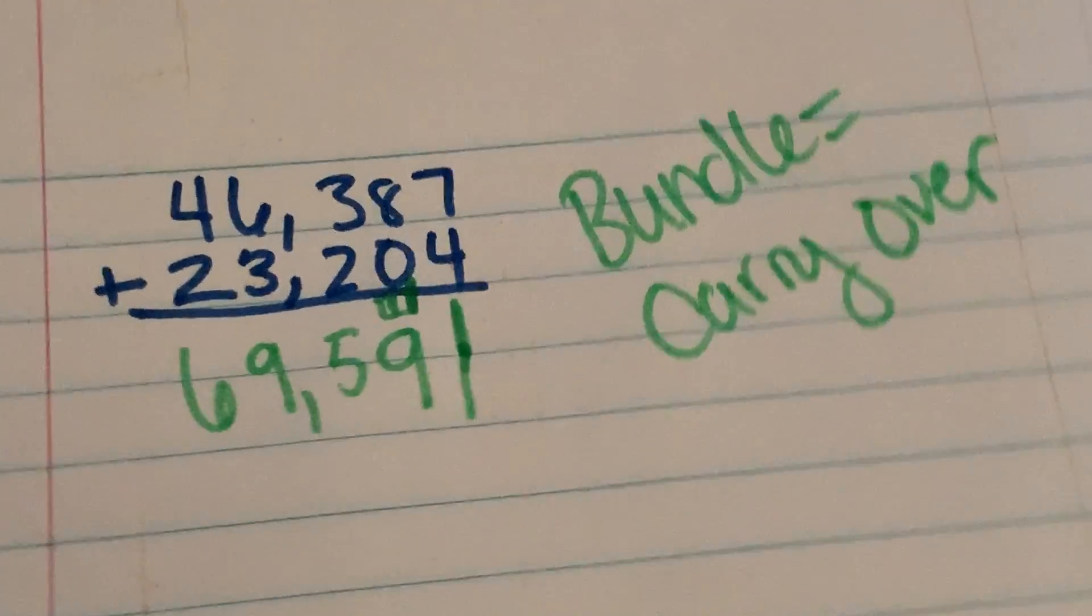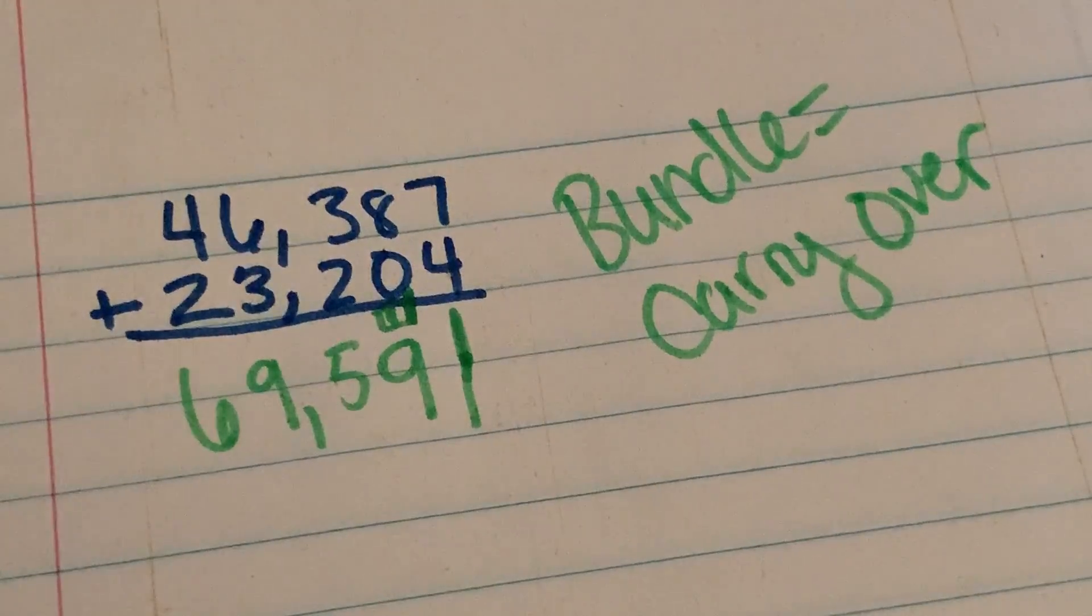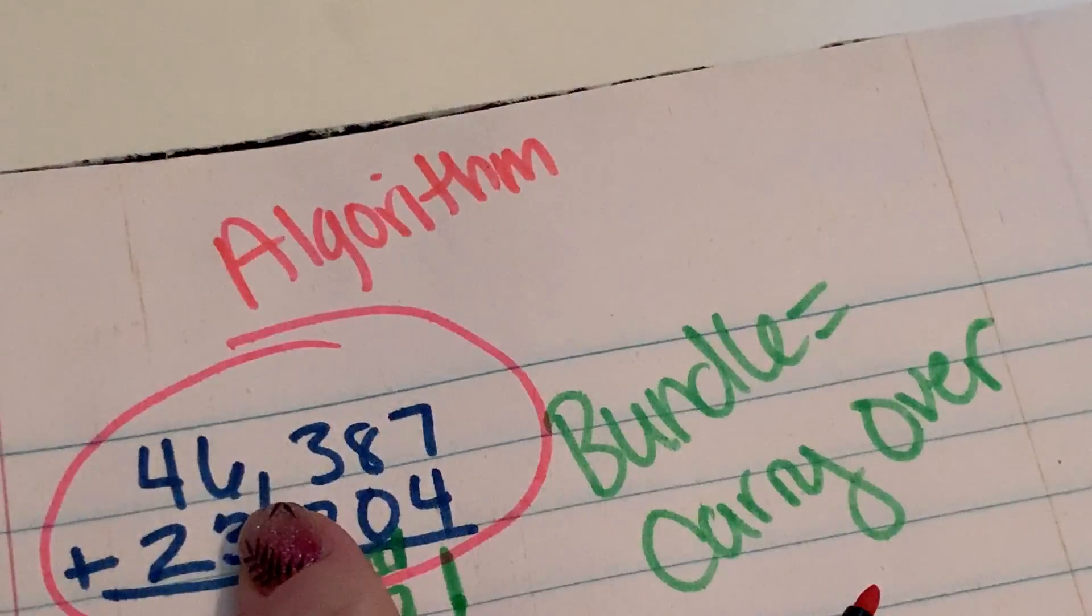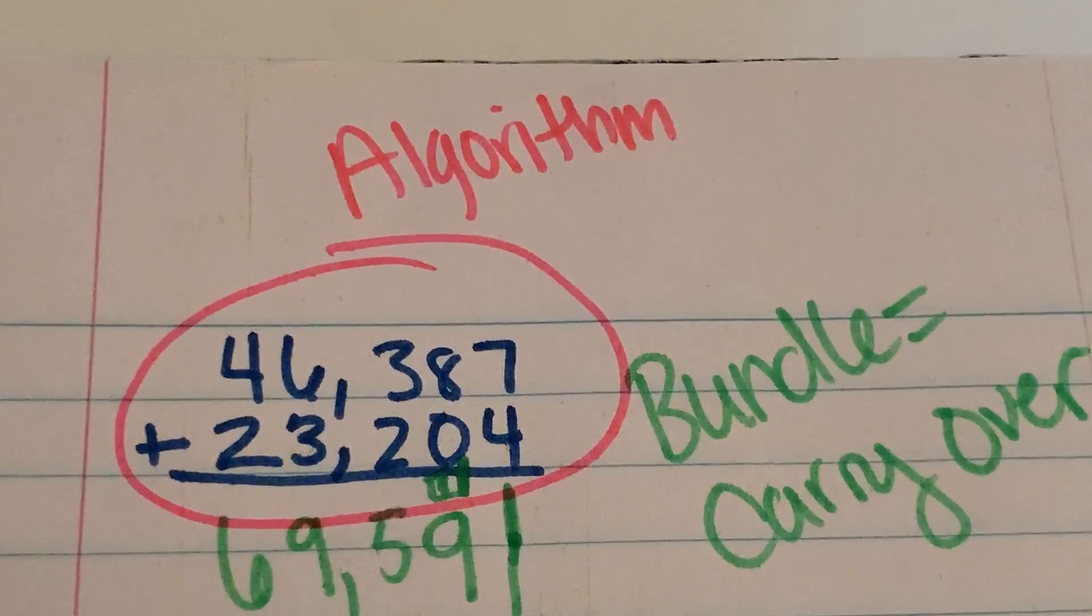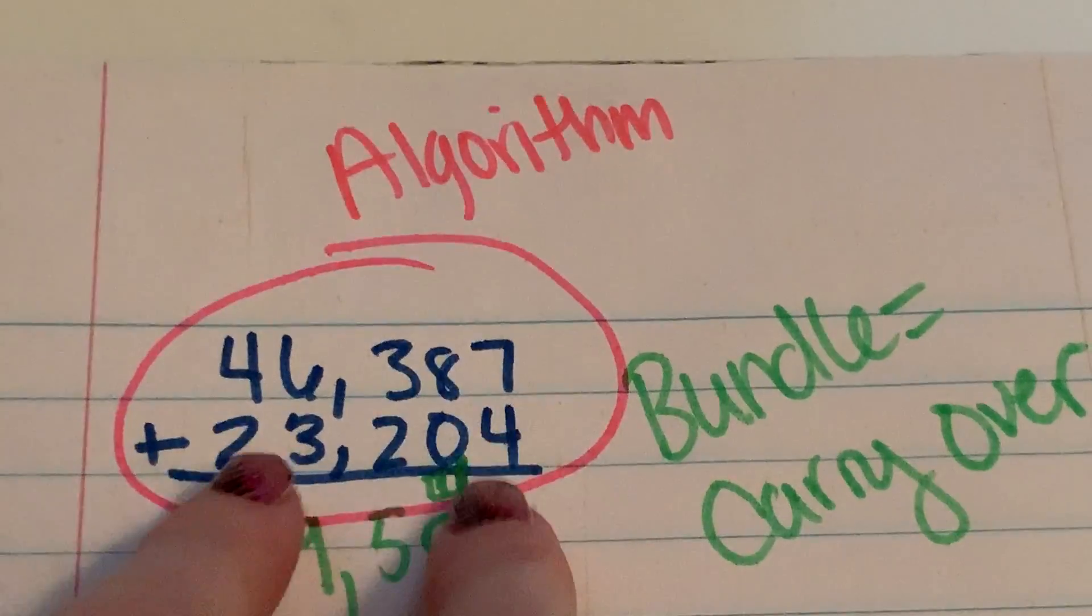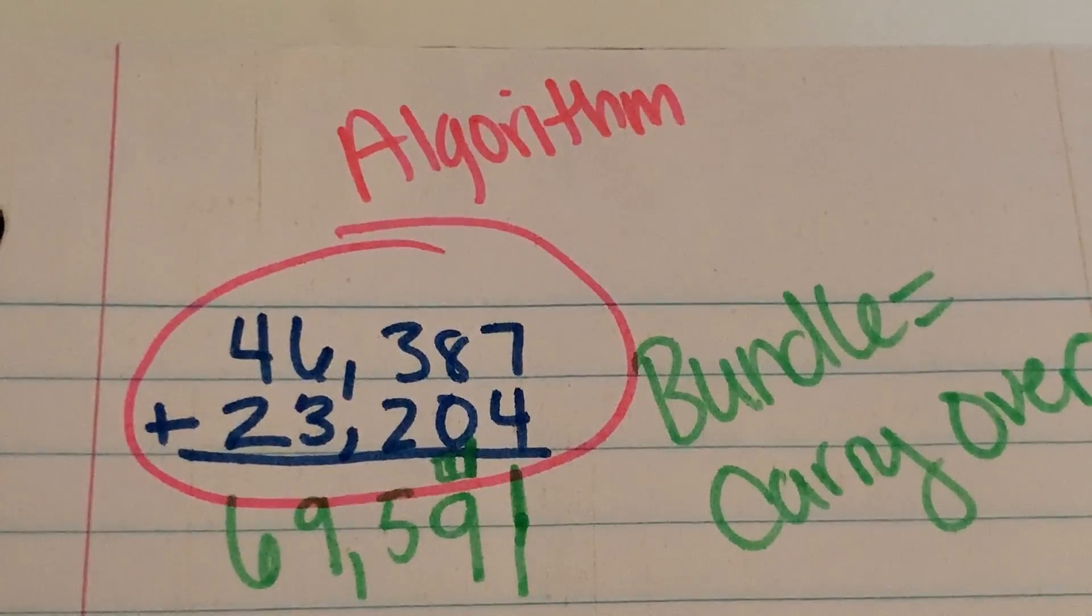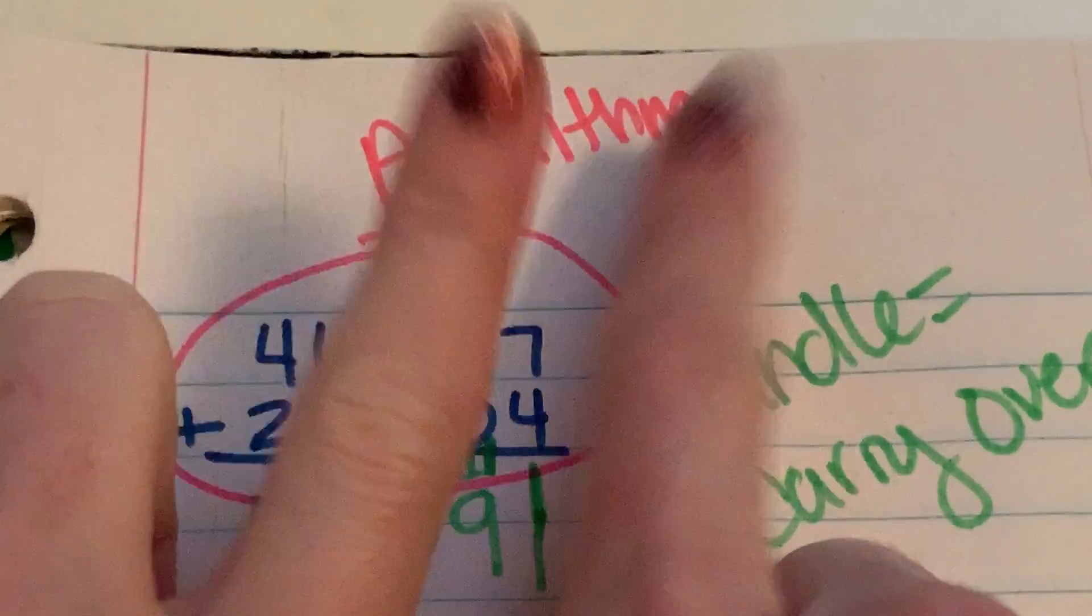All right, so this is called the algorithm, the addition algorithm. Basically, what that means is doing it this way. When they say an algorithm or traditional algorithm, they mean doing it this way, stacking the numbers like you've been taught. You might not know that word, so this is the algorithm.